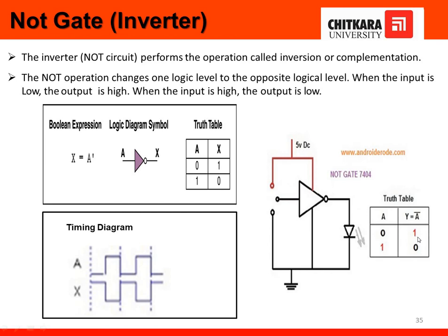Next gate is the NOT gate. NOT gate is just an inversion. It consists of one input, either 0 or 1. If we are giving 0, then it gives 1. If we are giving 1, then it gives 0. If you see here, when this switch is connected, it gives off. When it is disconnected, it gives the on condition.